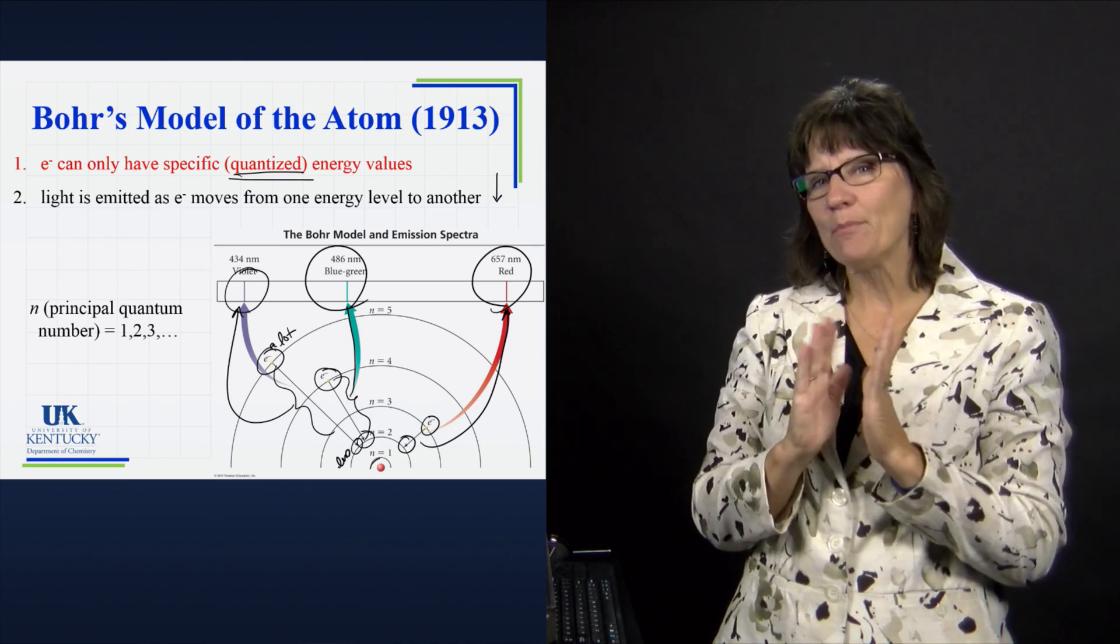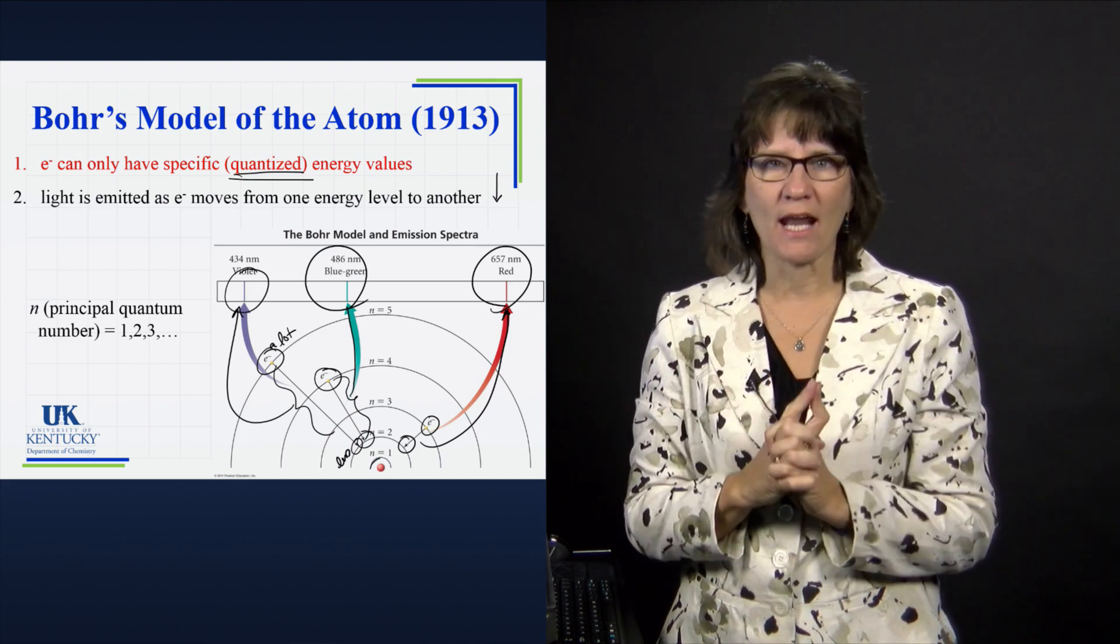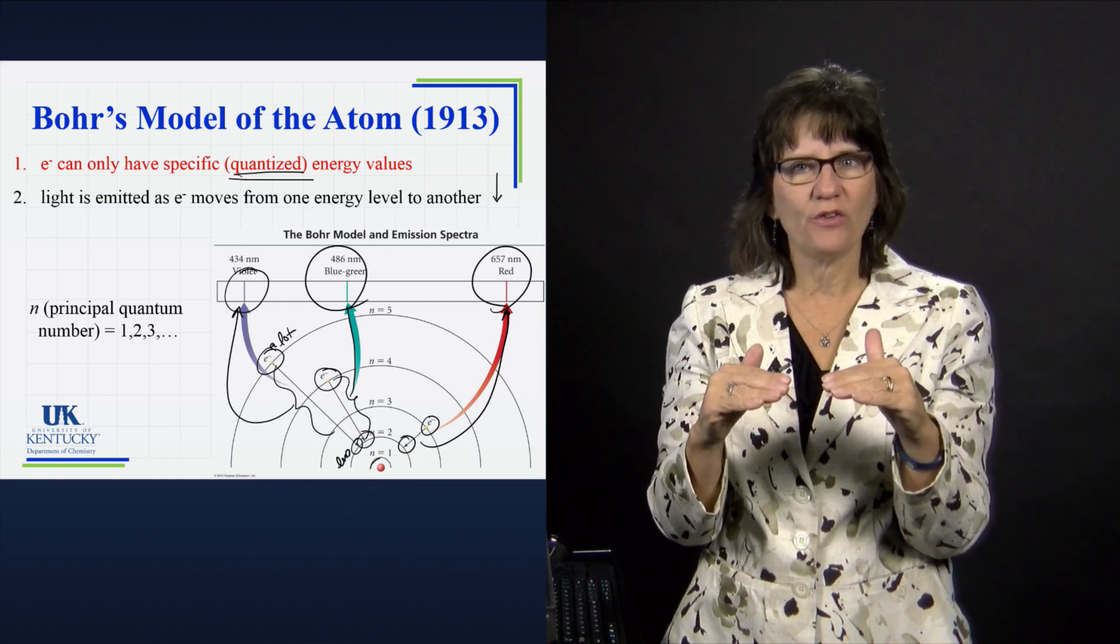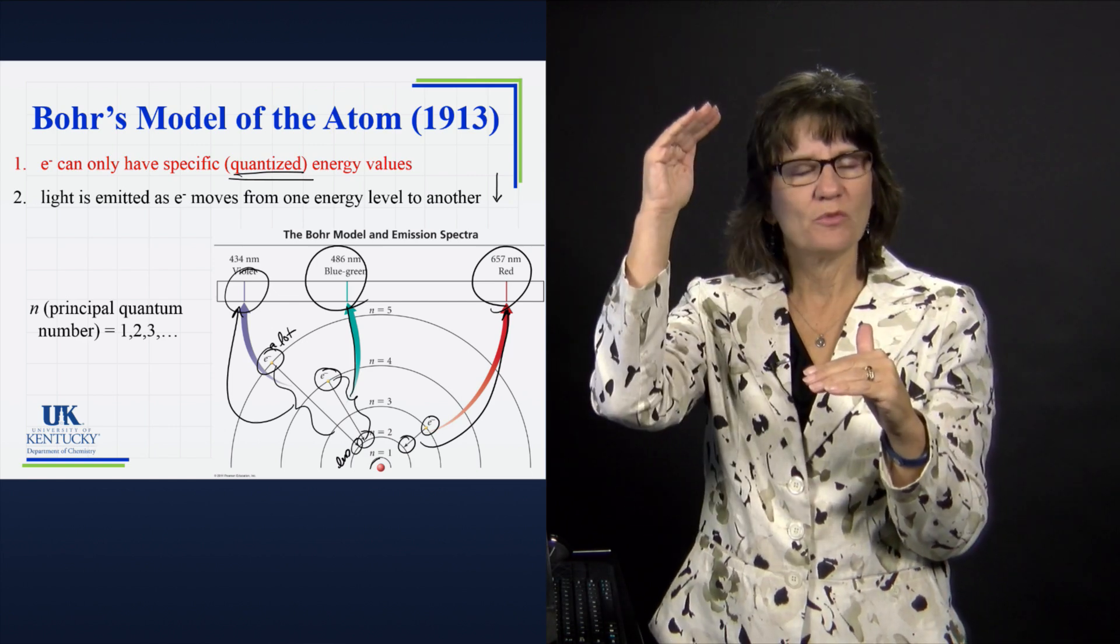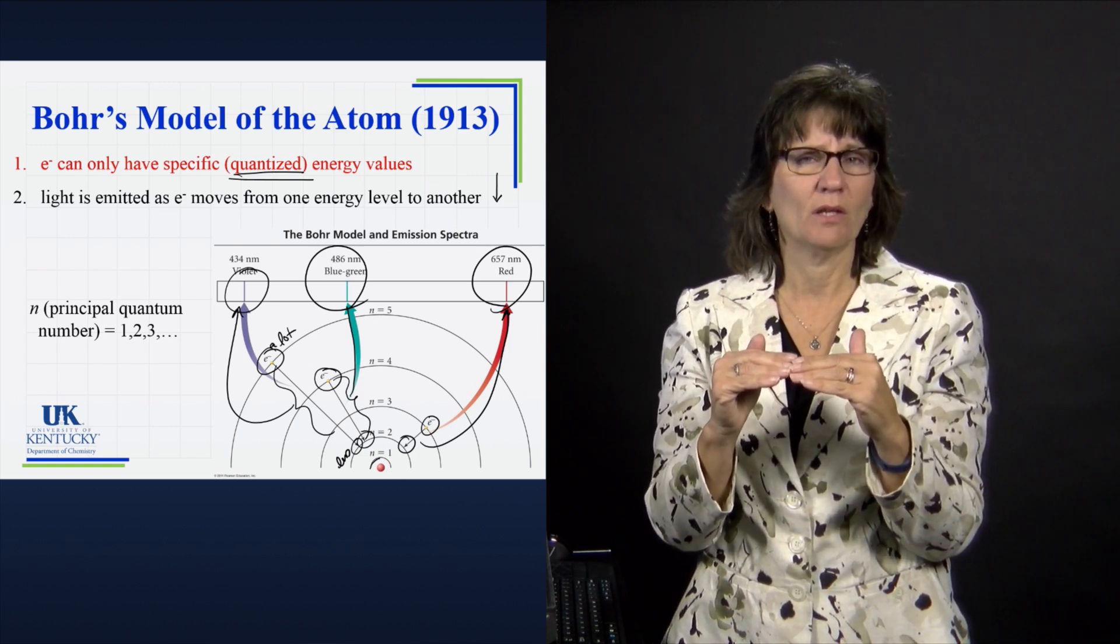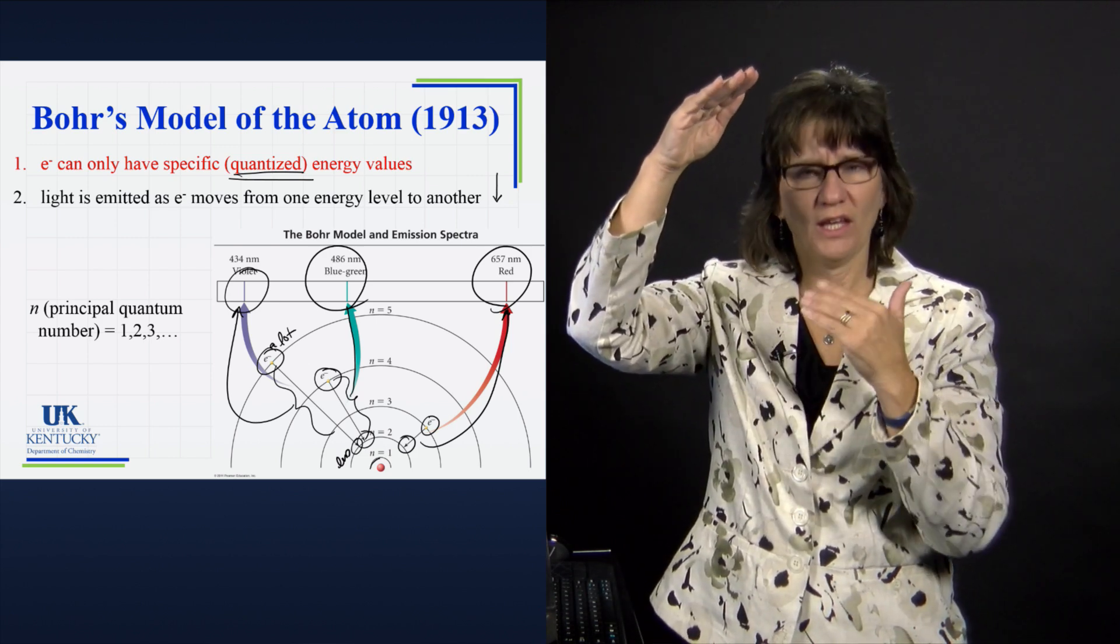The ones that happen to be in the visible region for a hydrogen atom are where it comes from some upper state and it falls into the n equal 2 state. When it goes from some upper level to the n equal 2, it ends up being in the visible region.